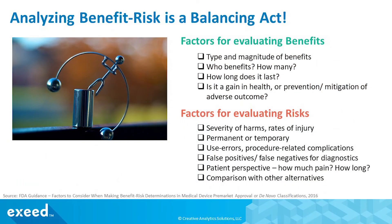How do you do this? Every organization has to figure that out, and it is best done in a cross-functional team with the appropriate level of subject matter expertise. Analyzing benefit-risk is a balancing act and requires a judgment call based on all available data, prior experience, nature of the circumstances, and type of risk. In a 2016 guidance document, FDA recommends a few factors for analysis of benefits and risks.